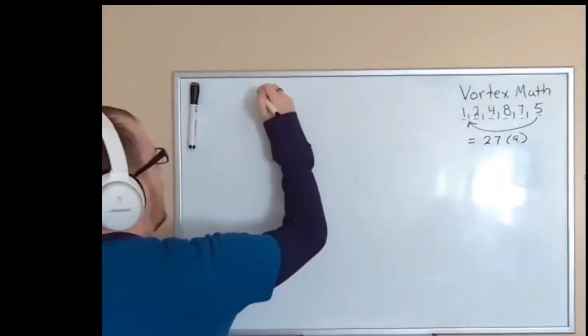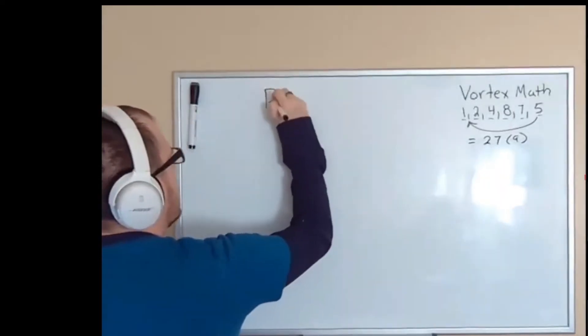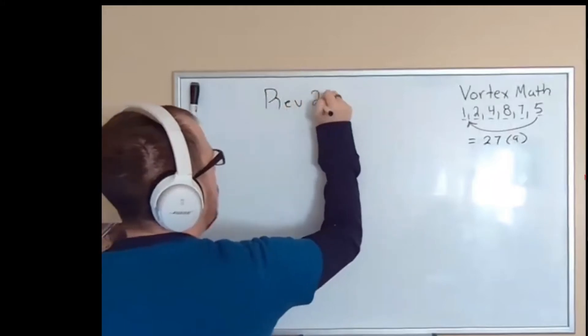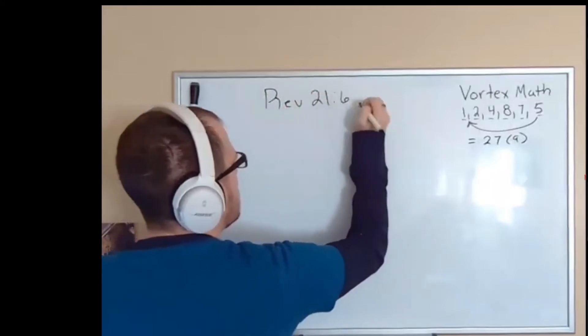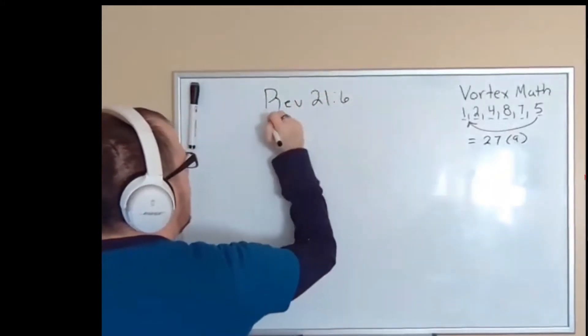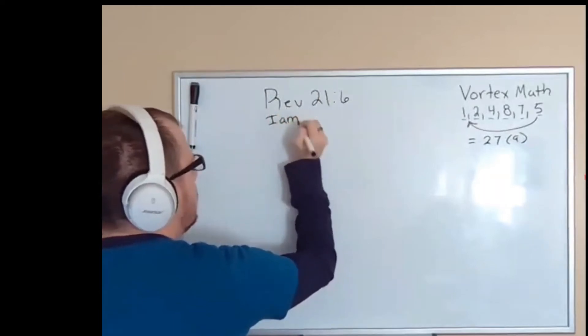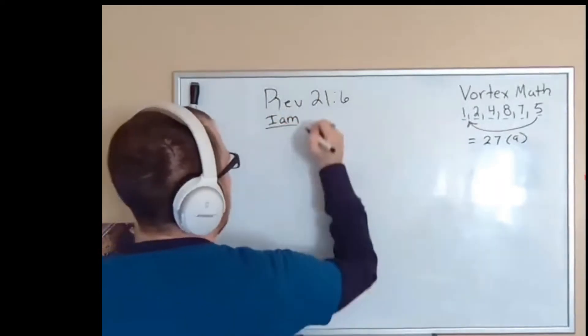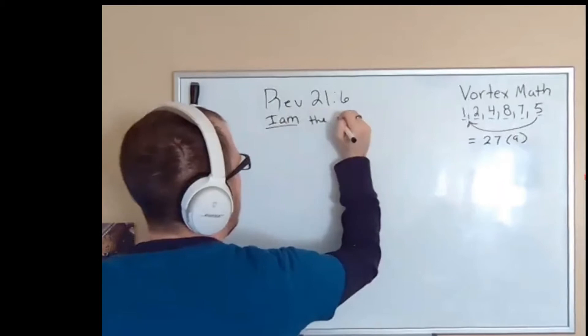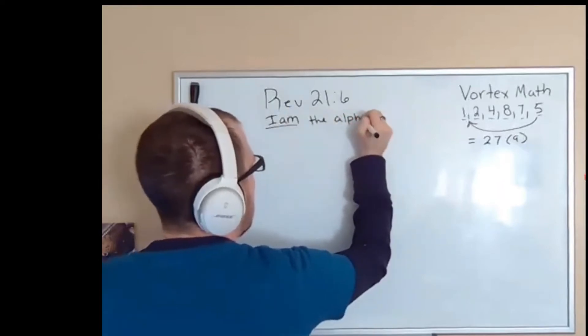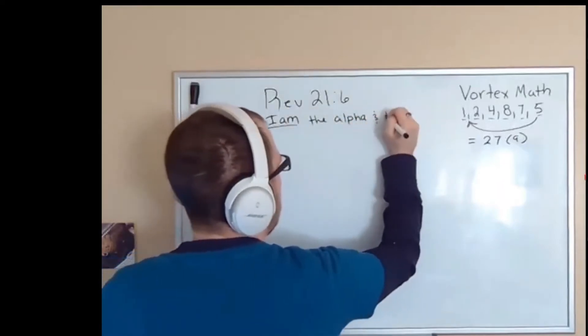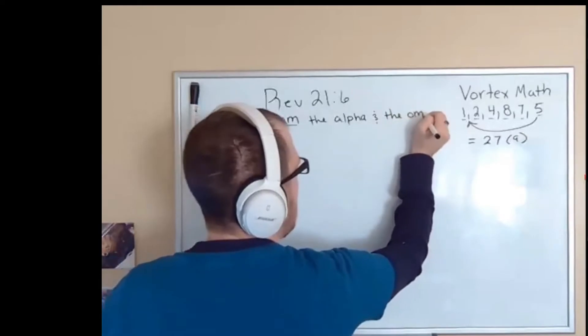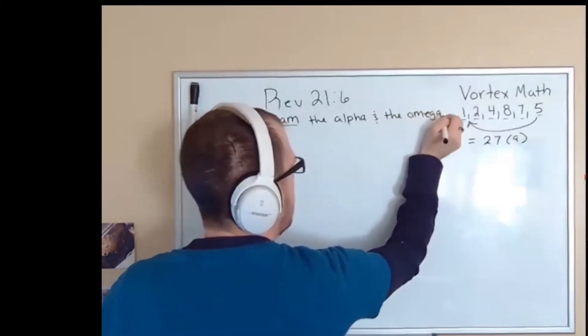In the Bible, there is a scripture in Revelations 21:6 that reads: I am—which those of you that are big on the I am, I love the I am—I am the alpha and the omega. And the rest of it says the beginning and the end.